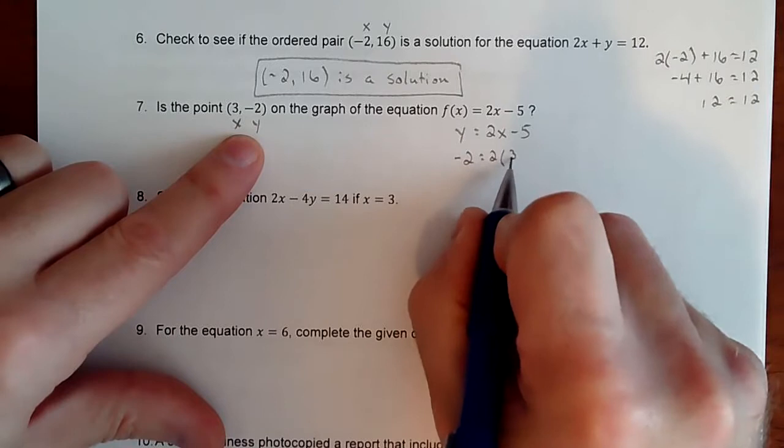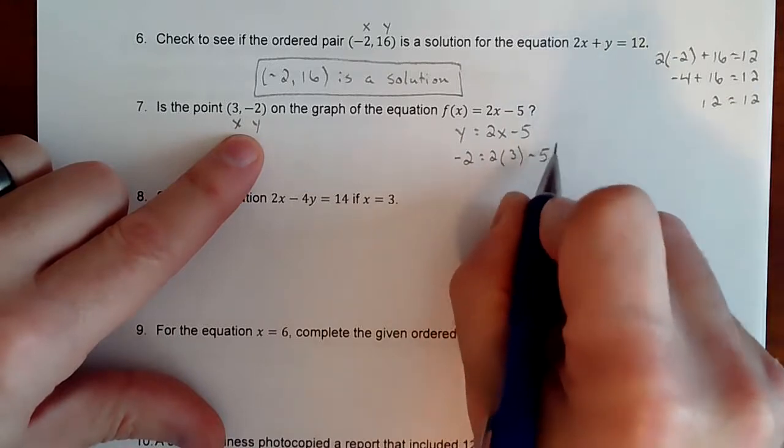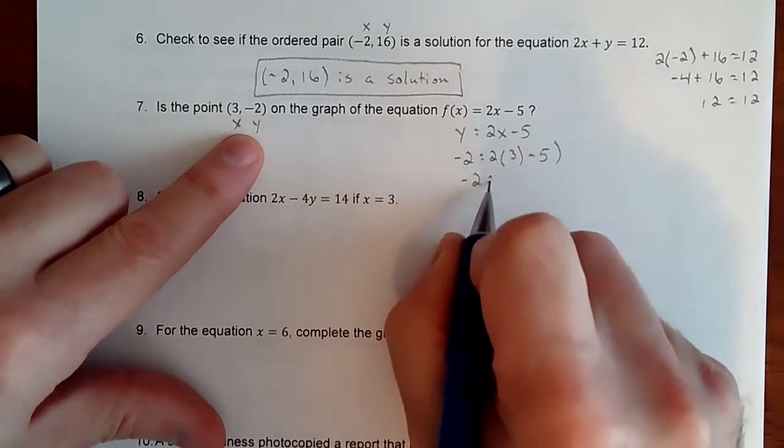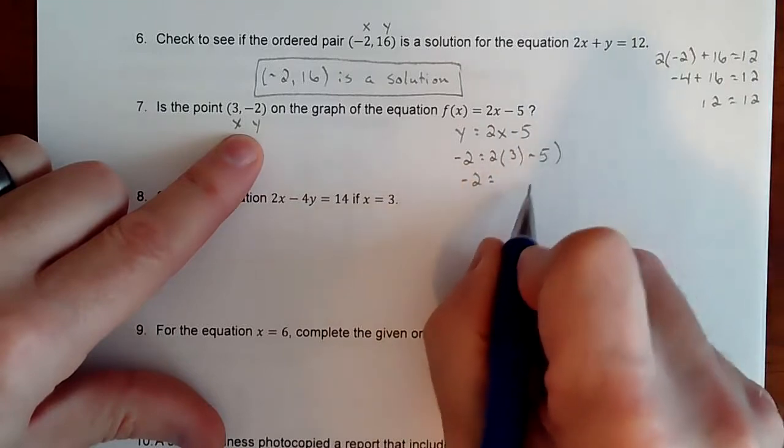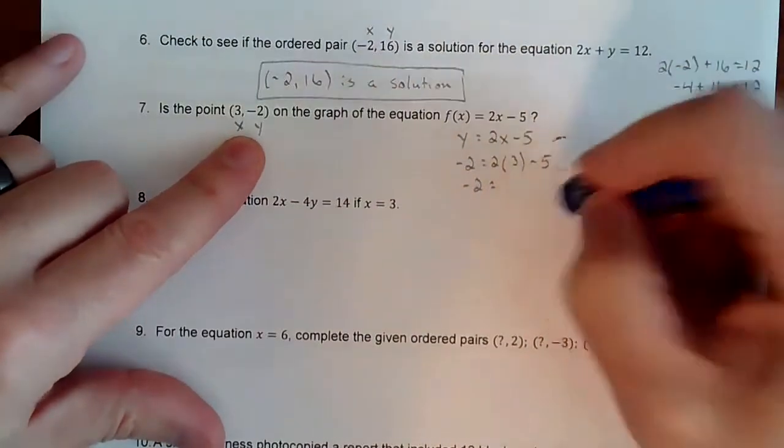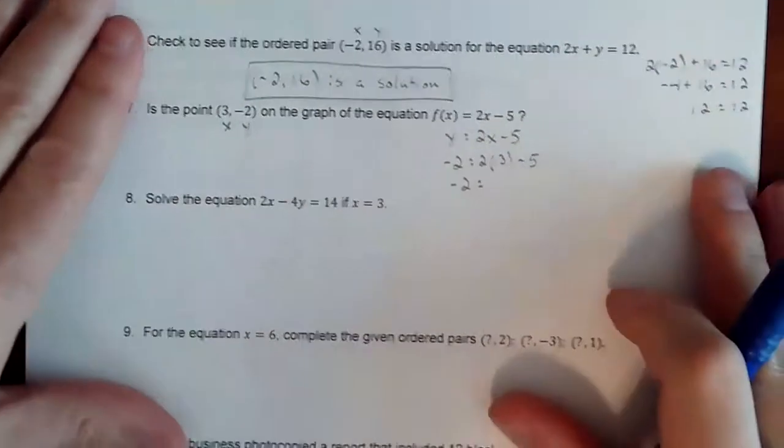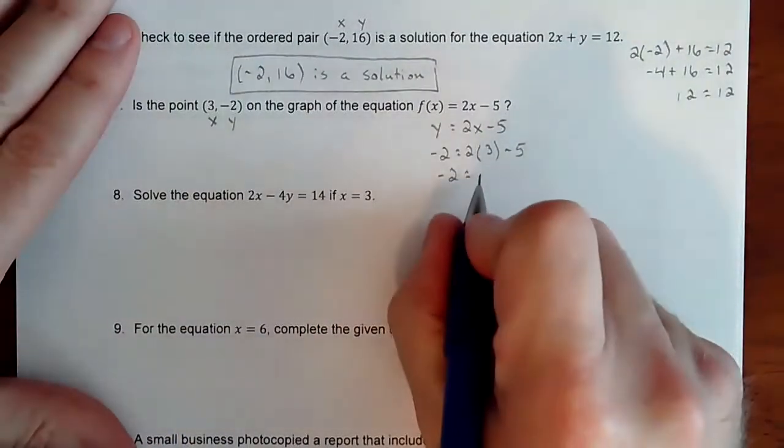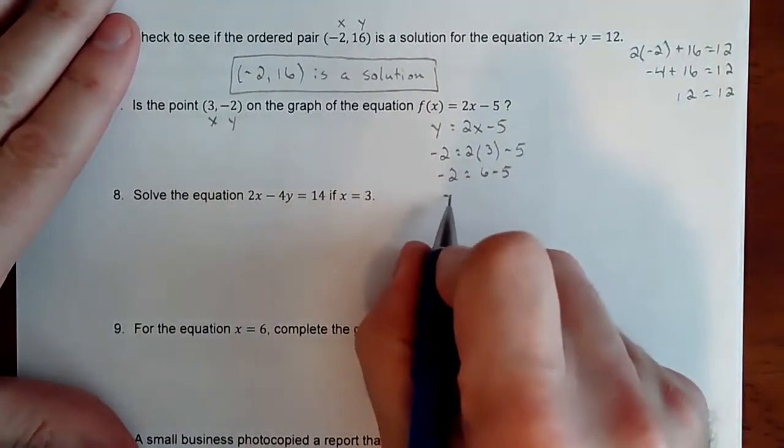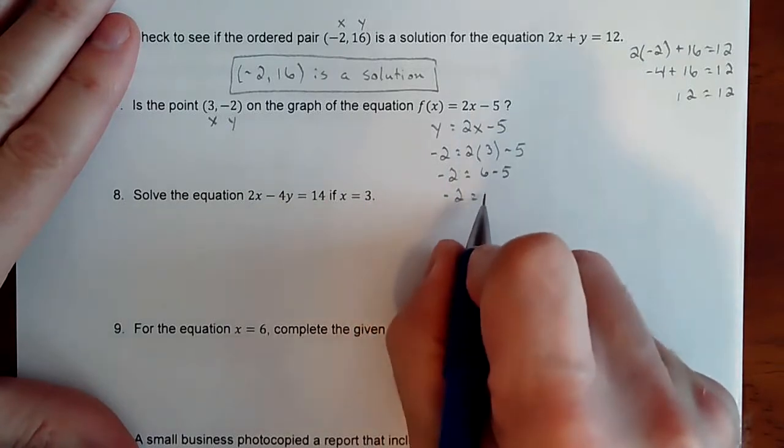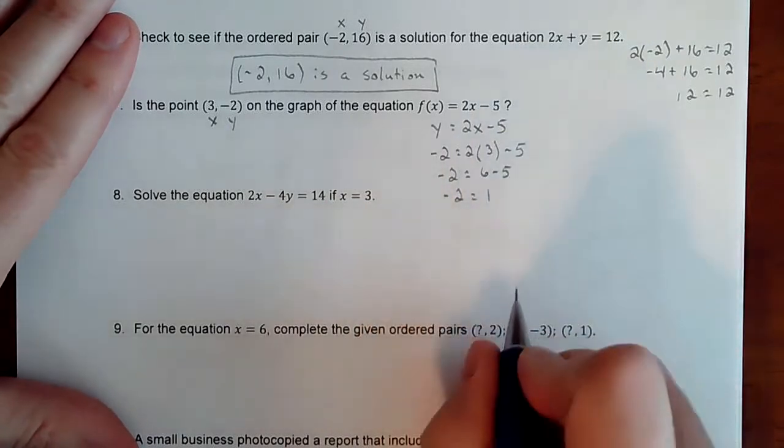So 2 times 3 minus 5. So there's nothing to do on the left side. This is a 6 minus a 5. 6 minus 5.